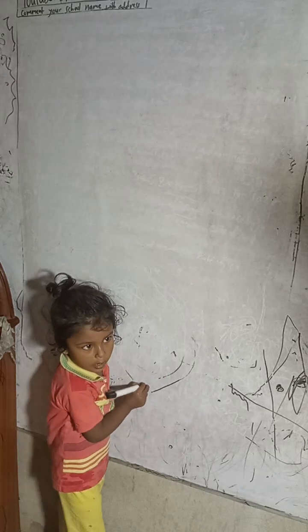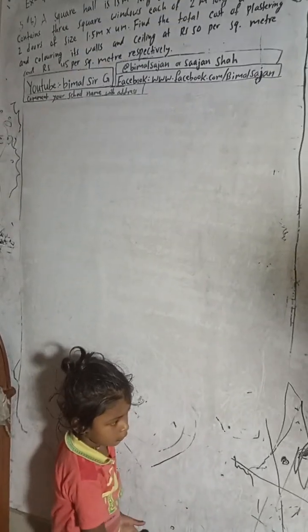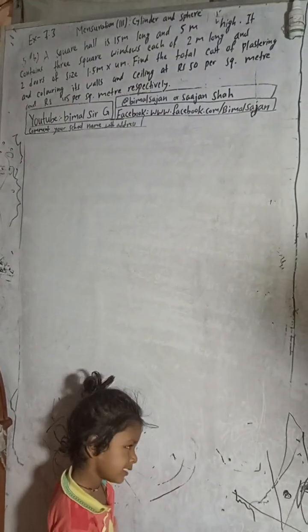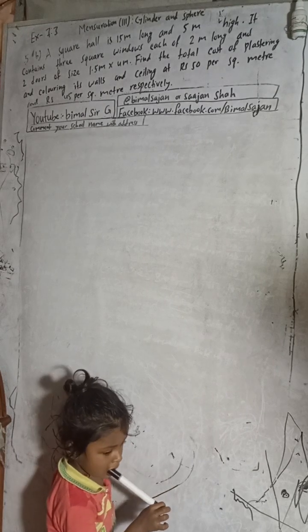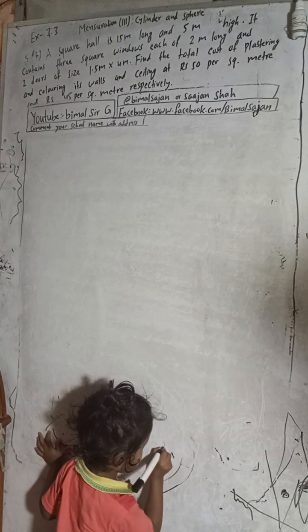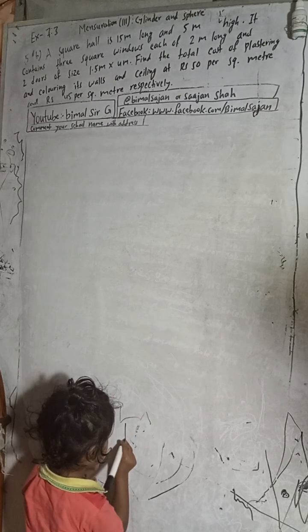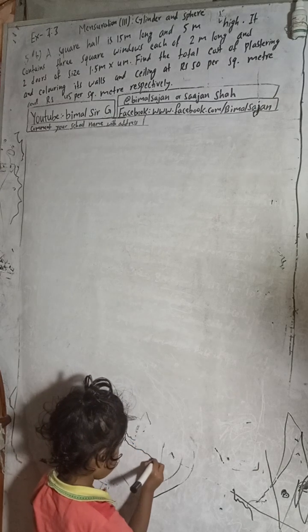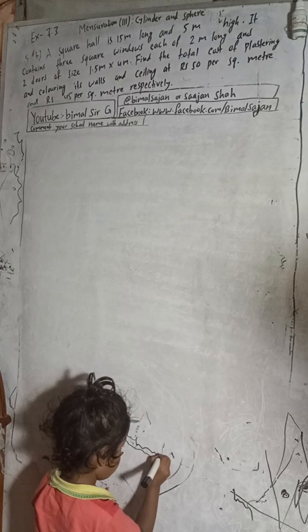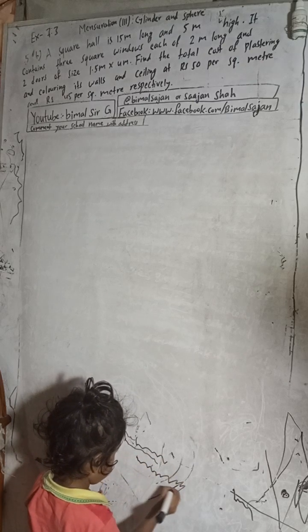Hi everybody, welcome back to Bimalsarji YouTube channel. This is question number 5B, exercise 7.3, mensuration — third cylinder and sphere — class 9 compulsory maths. In the Bimalsarji YouTube channel you can check the playlist where you will get class 9 and 10 solutions of optional maths, compulsory maths, and science as well.